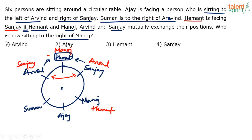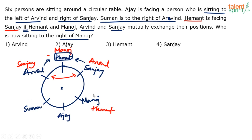The question asks who is now sitting to the right of Manoj. 'Now' means the real case — the original blue arrangement. The red positions were just a conditional assumption. The actual arrangement is: Ajay, Suman, Arvind, Hemant, Sanjay, Manoj around the table.